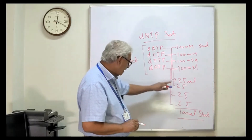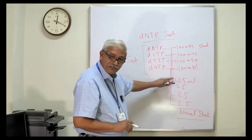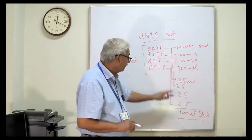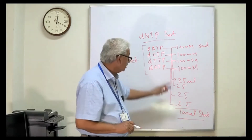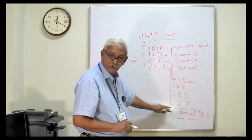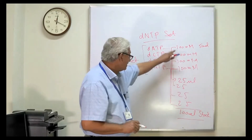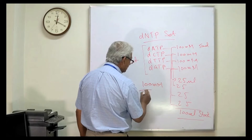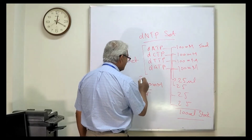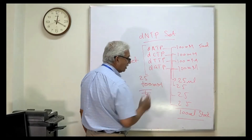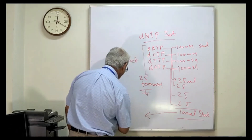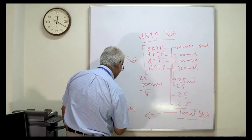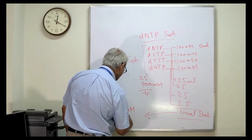When we mix 25 microliters of each to get 100 microliters total, we are diluting 25 microliters to 100 microliters — that is a four-times dilution. So initially the concentration is 100 millimolar; after four-times dilution we get 25 millimolar concentration of each dNTP.